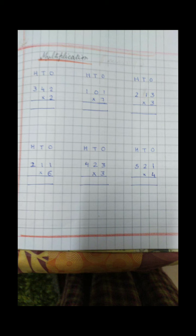The number being multiplied — we will write the answer below it. We start from the right side. Like suppose 101 into 7: 7 ones are 7, then 7 zeros are 0, write 0 below zero, and then again 7 ones are 7 — so we write 7. Okay, so this is simple.